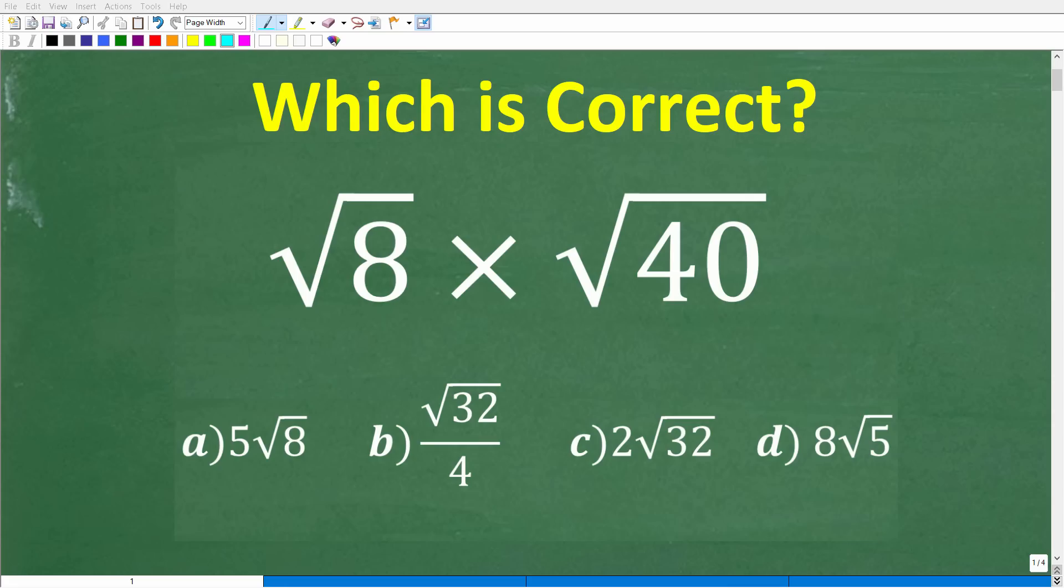One thing that you must know how to do to be successful in math is work with square roots without using a calculator. So put your calculator away and see if you can solve this problem right here. That is the square root of 8 times the square root of 40. So what does this equal to?